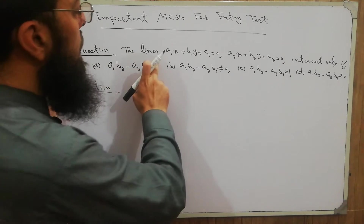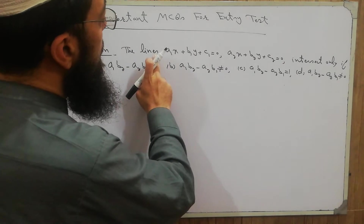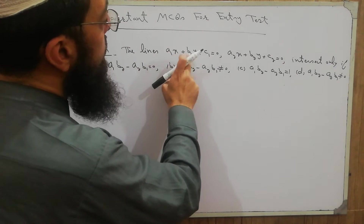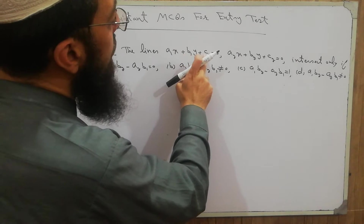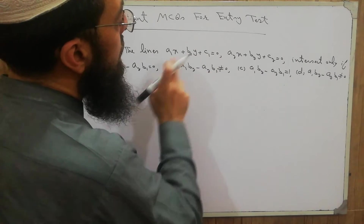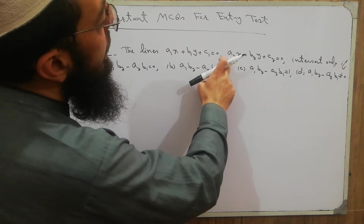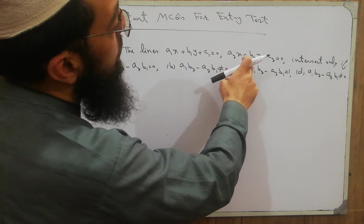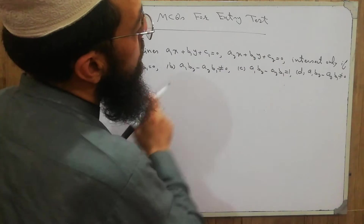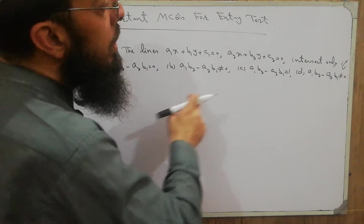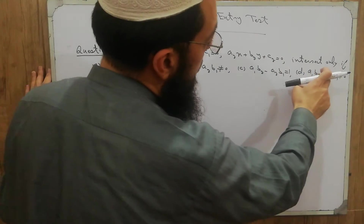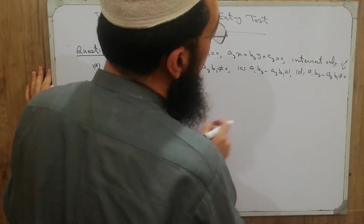The question is: the lines a1x + b1y + c1 = 0 and a2x + b2y + c2 = 0 intersect only if...